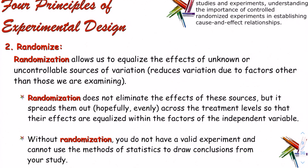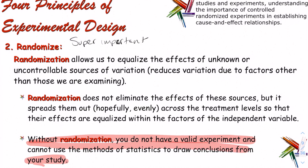Principle two: randomize. This is super important. Randomization allows us to equalize the effects of unknown or uncontrollable sources of variation — reducing variation due to lurking or confounding variables. Randomization does not eliminate the effects of these sources, but it spreads them out, hopefully evenly, across the treatment levels so their effects are equalized. Without randomization, you do not have a valid experiment and cannot use statistical methods to draw conclusions. If the word 'randomization' is not in your experimental design, the whole thing must be thrown out.